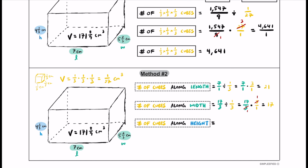Finally, the height is four and one-third centimeters, which as an improper fraction is 13/3. Dividing by 1/3 means multiplying by its reciprocal: 13/3 × 3/1. The threes cross-cancel, and we get 13. So we can stack 13 of these one-third cubes along the height.